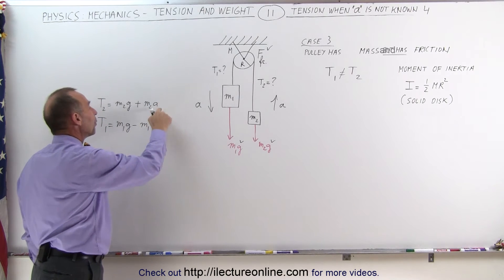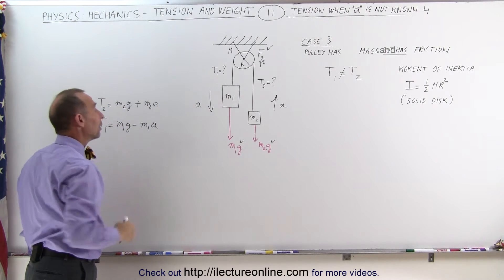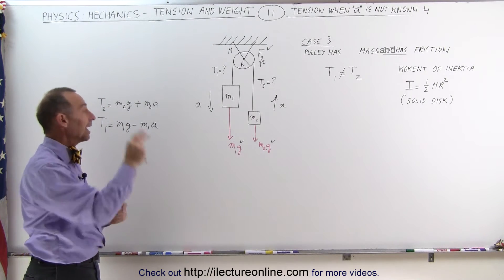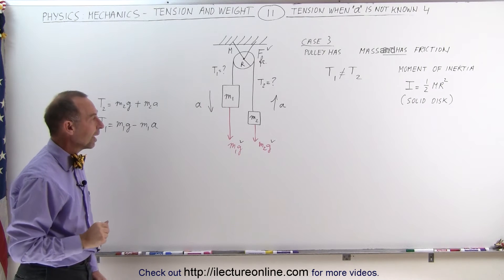It all comes down to finding out what A is equal to in order to find T1 and T2. And remember, they're not equal. If you find one of them, that means you still have to calculate the other one. You cannot just assume they're both the same.